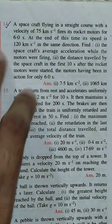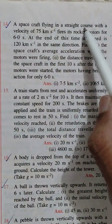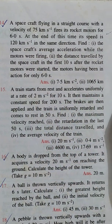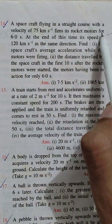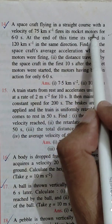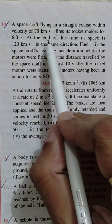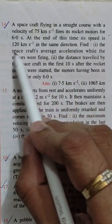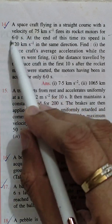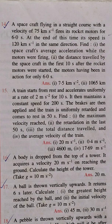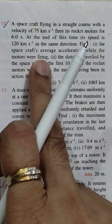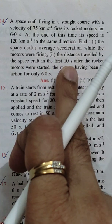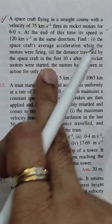Hello everyone. Today we will be solving this problem: a spacecraft flying in a straight course with a velocity of 75 km/s fires its rocket motors for 6 seconds. At the end of this time, its speed is 120 km/s. We need to find the spacecraft's average acceleration while the motors were firing, and the distance traveled in the first 10 seconds after the rocket motors were started.